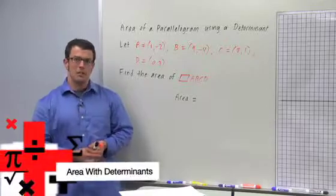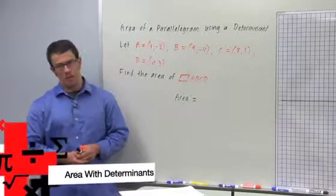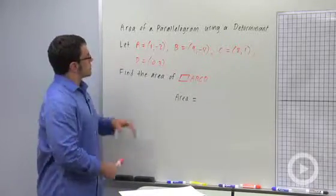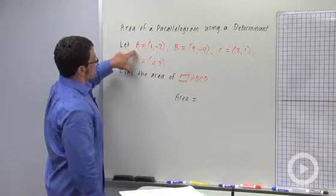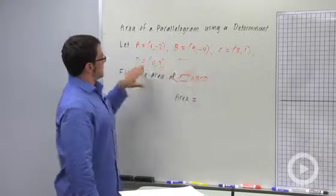One really neat application of determinants is that they can be used to find the area of a parallelogram. Now suppose I create a parallelogram using these four points A, B, C, and D.